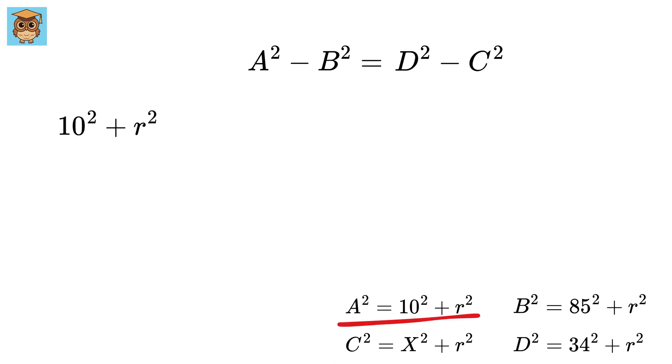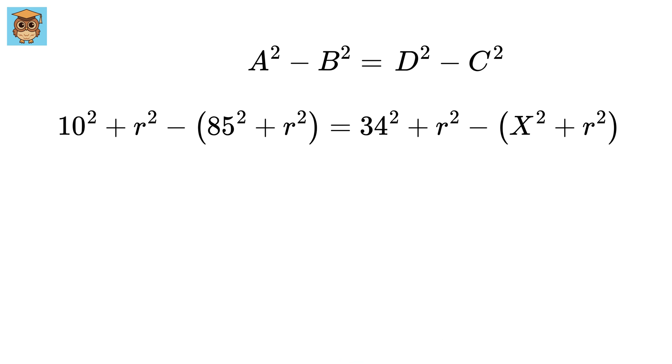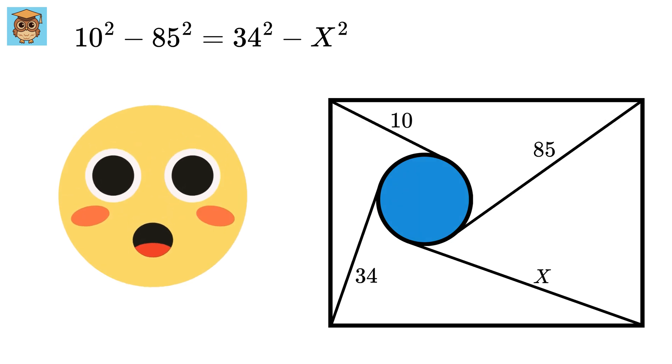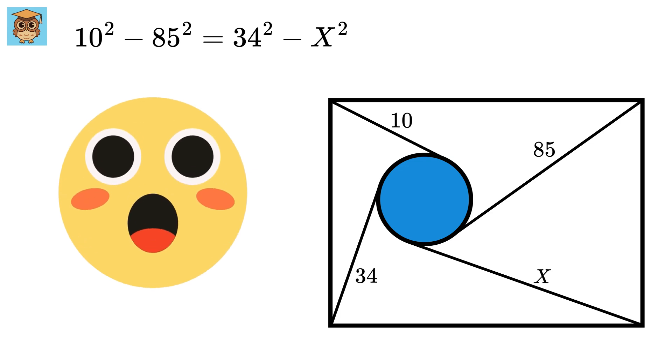We get a square equals this, b square equals this, d square, and c square as these. Wow! The r squares get cancelled out and we are left with 10 square minus 85 square equals 34 square minus x square. This was the relationship between tangents I was talking about in the beginning. It is independent of the value of r or the radius of this circle.